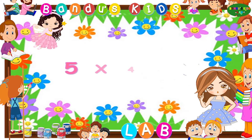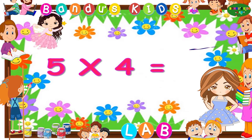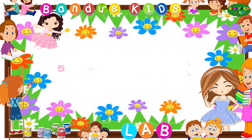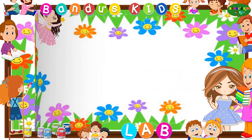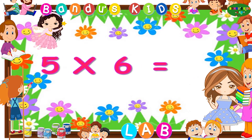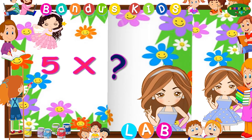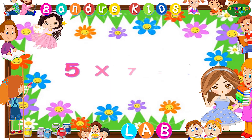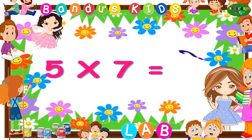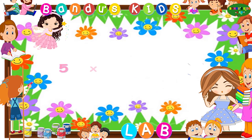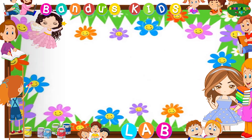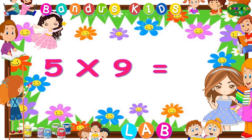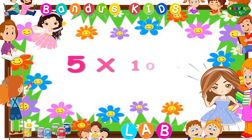Five fours are twenty. Five sevens are thirty-five. Five eights are forty. Five nines are forty-five. Five tens are fifty.